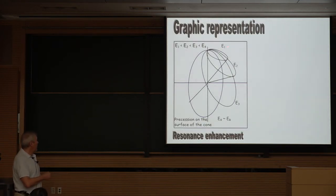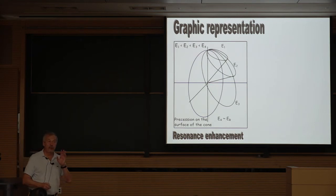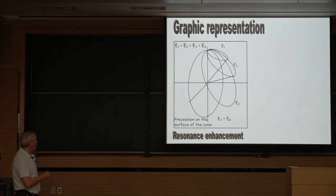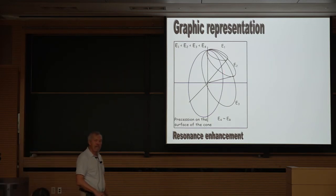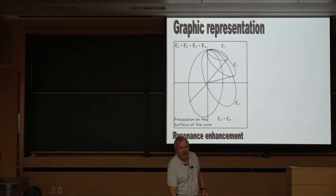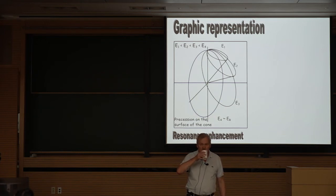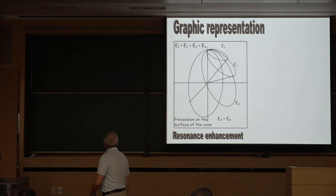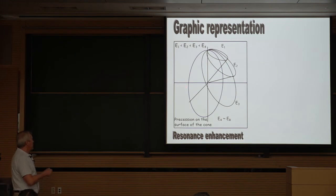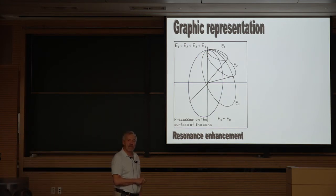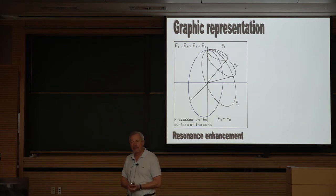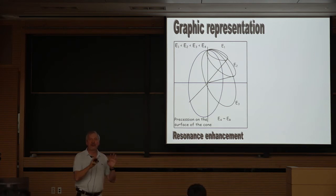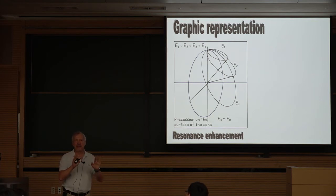For different energies, the precession occurs around different cones: at resonance the cone opening is maximal; away from resonance mixing is suppressed and the cone becomes smaller.